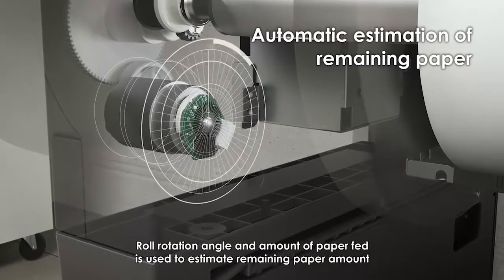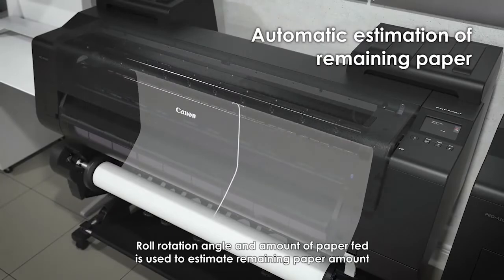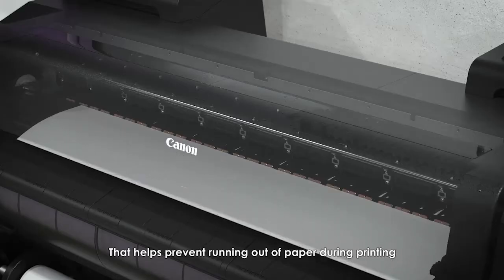Roll rotation angle and amount of paper fed is used to estimate the remaining amount of paper. That helps prevent running out of paper during printing.